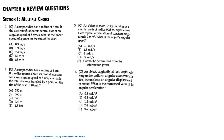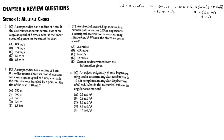In the first question, a compact disc has a radius of 6 centimeters. If the disc rotates about its central axis at an angular speed of 5 revolutions per second, what is the linear speed of a point on the rim? The radius is 0.06 meters, the angular speed is 5 times 2π radians per second, and the linear speed at the rim is v = rω. Substituting gives 1.9 meters per second, which is answer B.